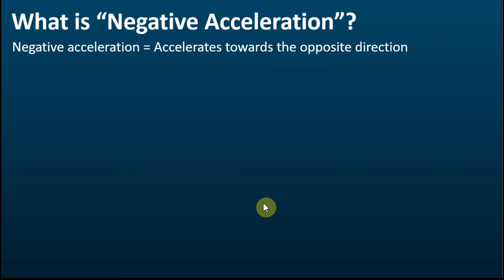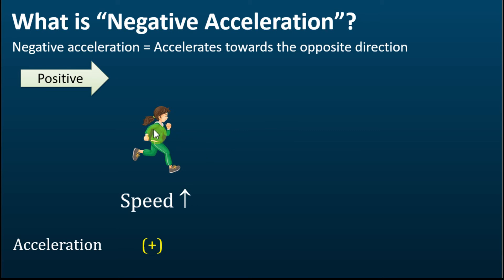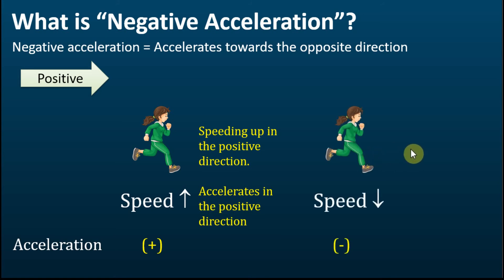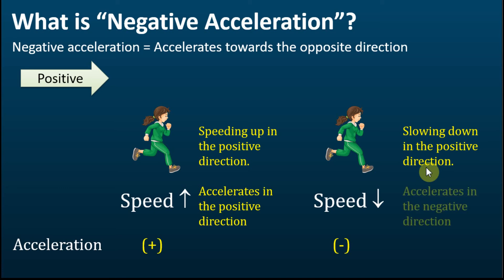If negative acceleration is not equal to deceleration, then what is negative acceleration? Negative acceleration simply means accelerating towards the opposite direction. For example, a girl running in the positive direction with increasing speed has positive acceleration — she is accelerating in the positive direction. If she is moving in the positive direction but with decreasing speed, she is slowing down in the positive direction, which equals accelerating in the negative direction. Therefore, the acceleration is negative.